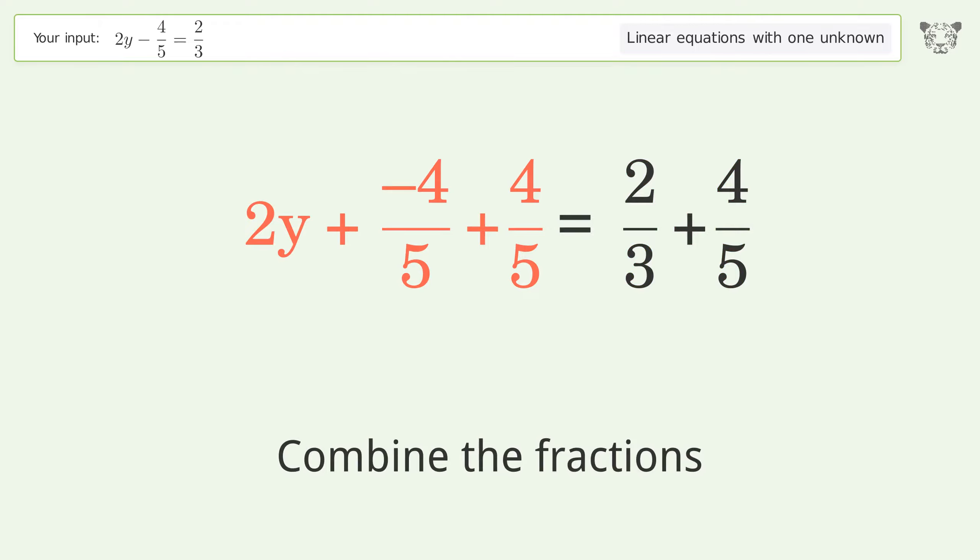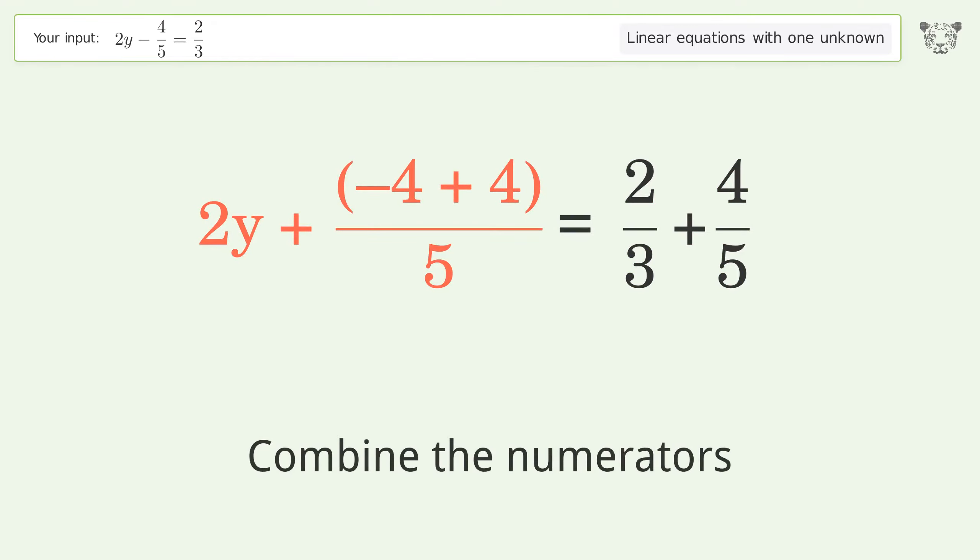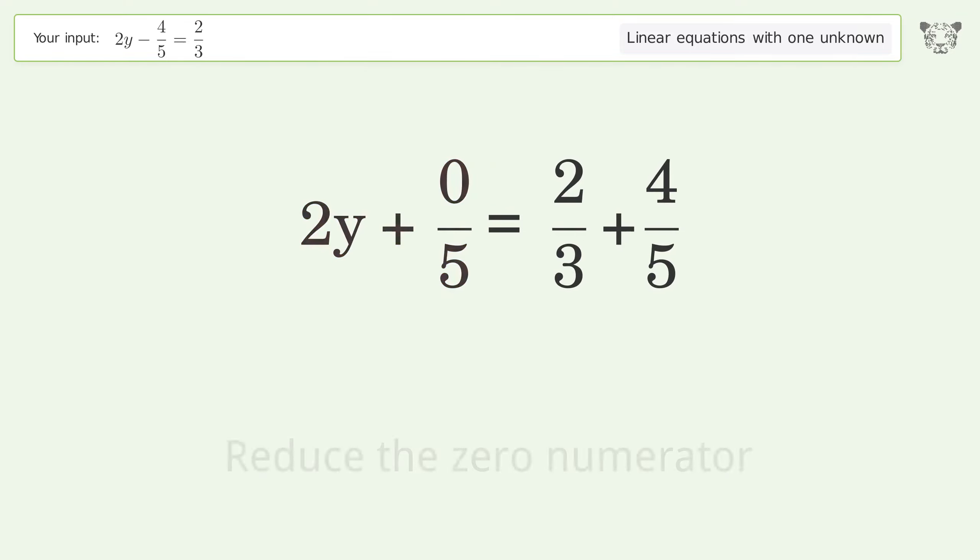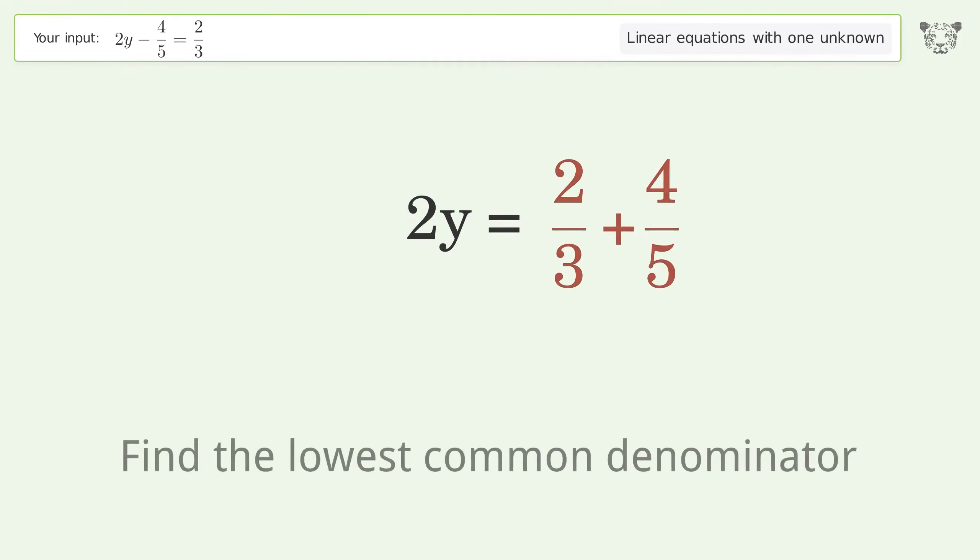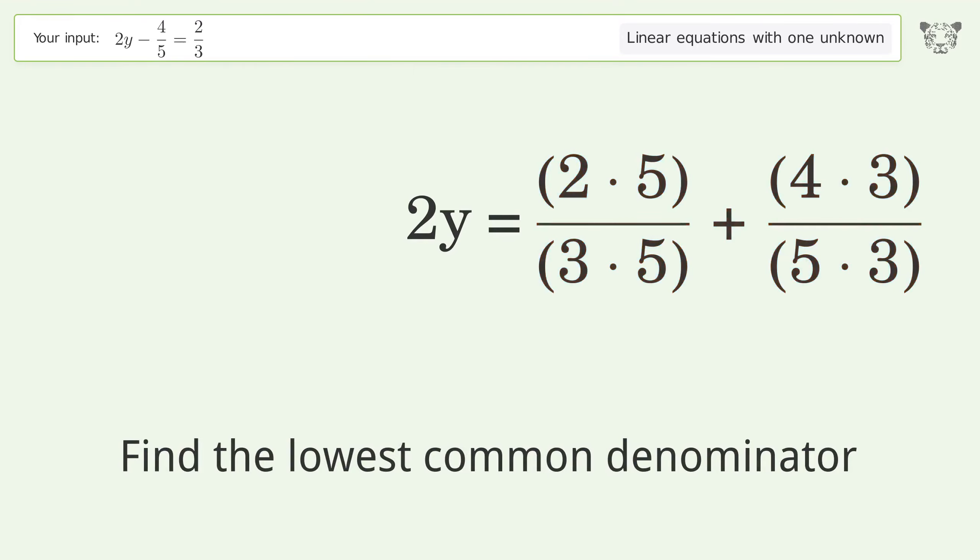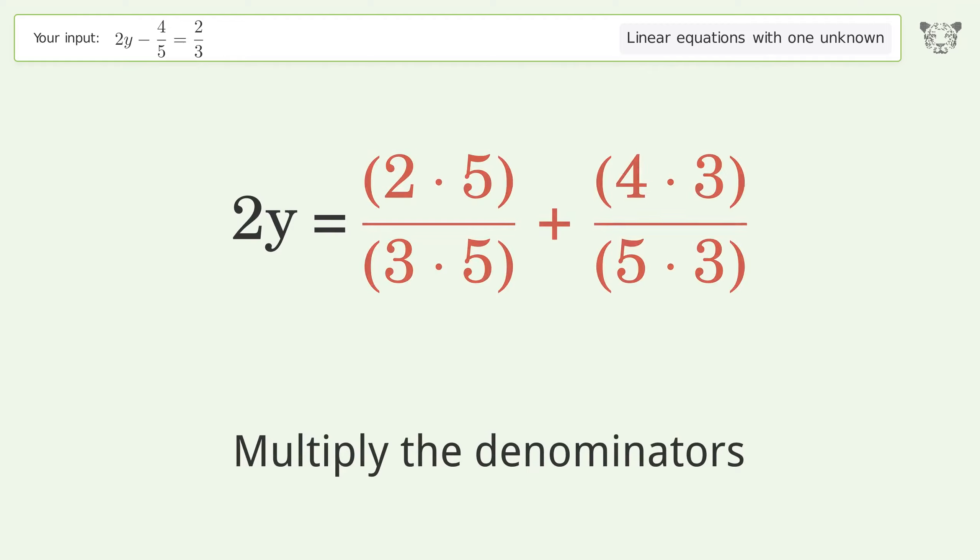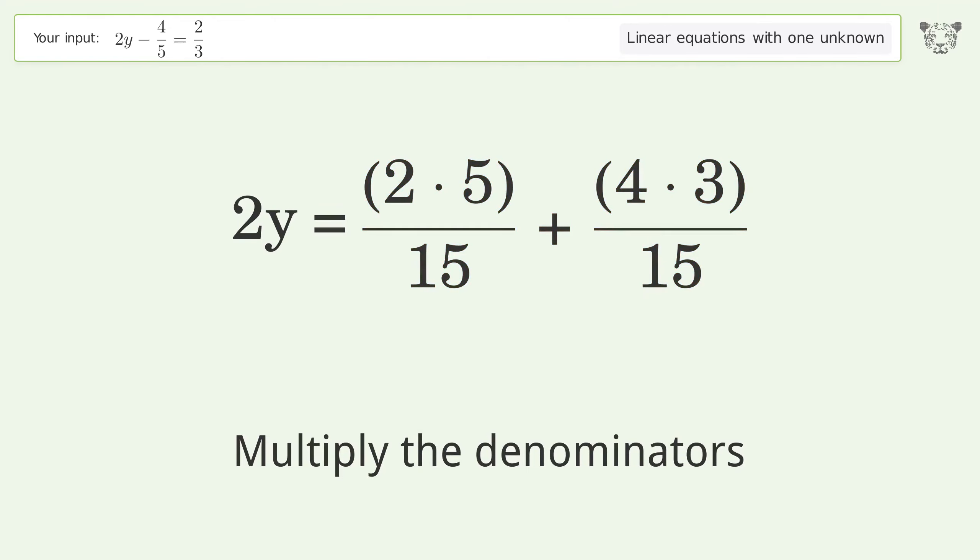Combine the fractions. Combine the numerators. Reduce the zero numerator. Simplify the arithmetic. Find the lowest common denominator. Multiply the denominators. Multiply the numerators.